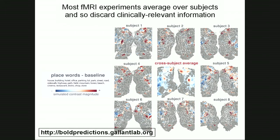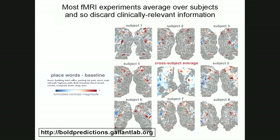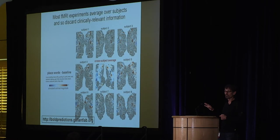Here you can see eight individual brain maps on the outside of the circle, just mapping place words minus a baseline of no words. The average map in the middle shows some place-word-related activity, but it doesn't match any of the individual maps. If we want to use functional neuroimaging for diagnosis, prognosis, or monitoring, we're going to have to come up with a very fast method of building individual maps for individual patients.